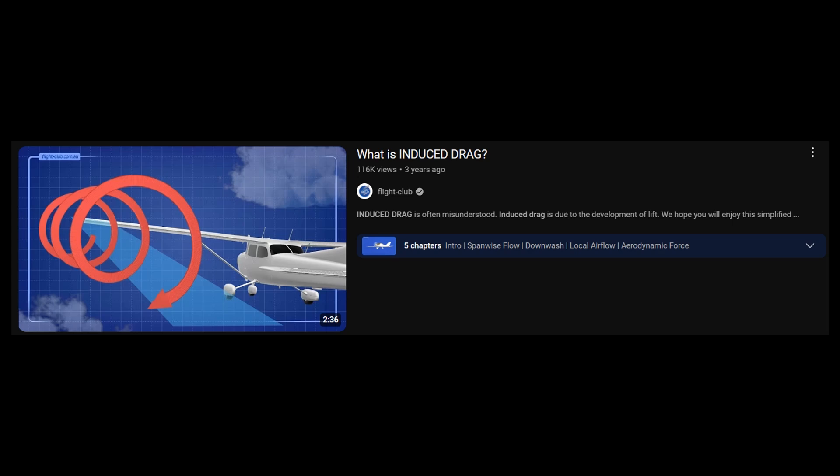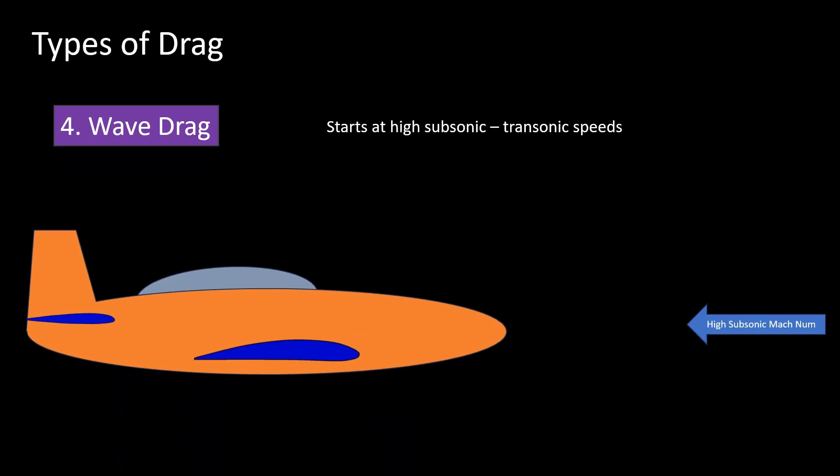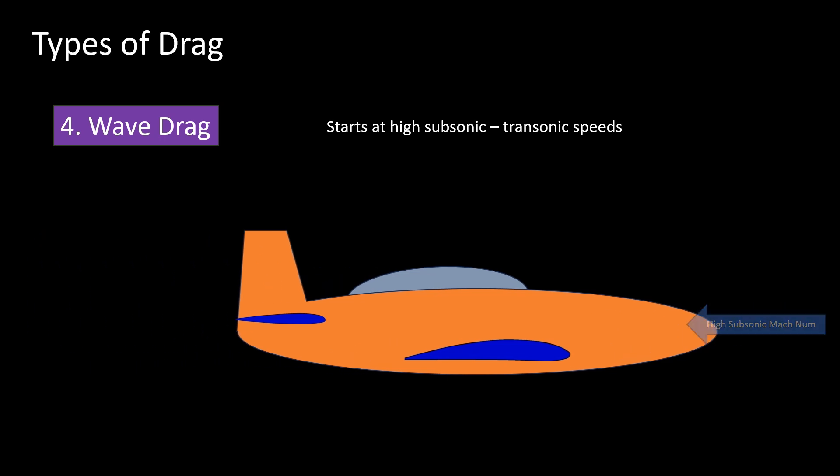Then comes wave drag. This drag is experienced when the aircraft flies at high subsonic or transonic speeds. It is caused by the rise in pressure around a body due to the formation of a normal shock wave.